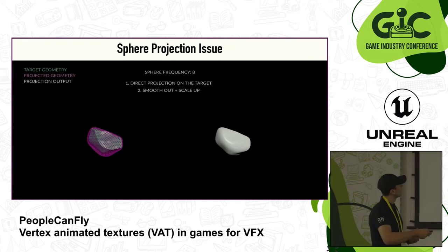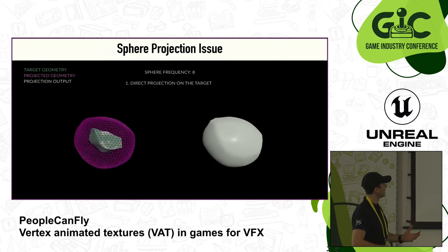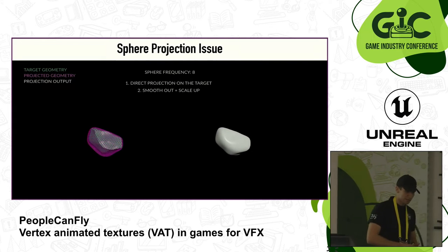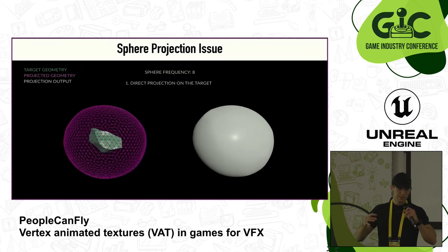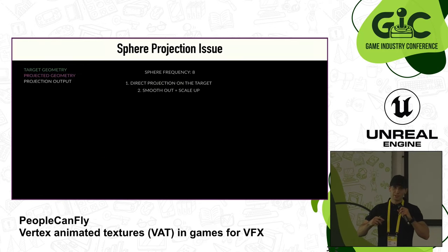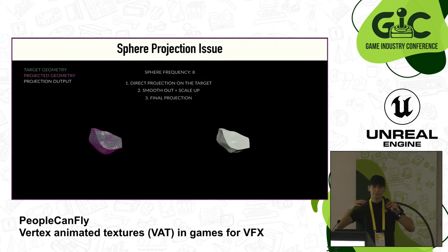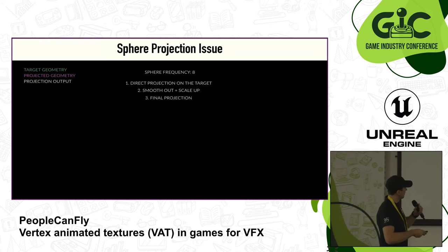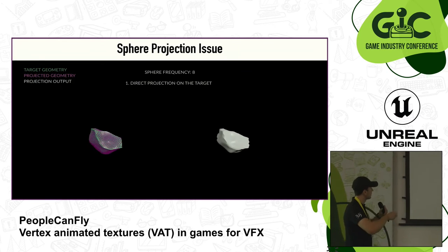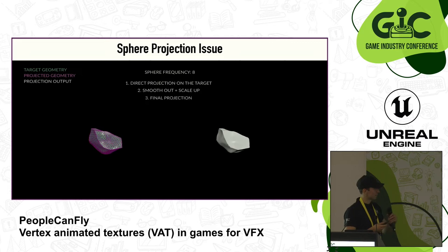We came up with a solution using a multi-step process. Step one: direct projection — attacking the target from the sphere geometry. Step two: we don't project directly from sphere to target piece but instead do an intermediate projection — we first project directly, then scale it up and smooth the geometry slightly. Step three: we then have a better basis to reproduce the piece again. The final step produces a much more accurate reproduction. When you compare the geometry marked in green to the final piece from step three, you can see we achieved a good result.